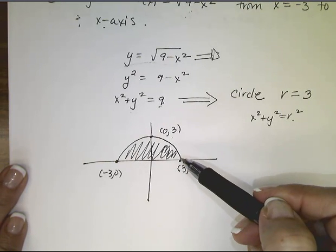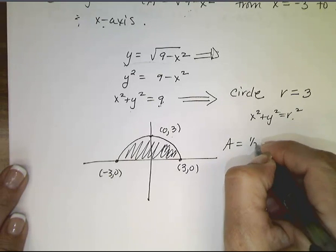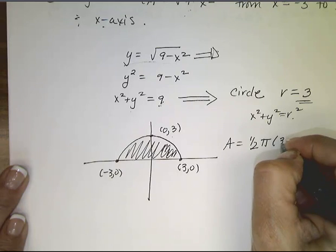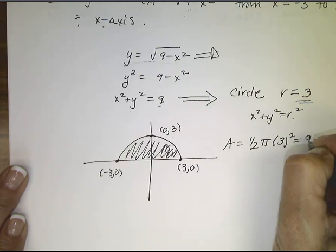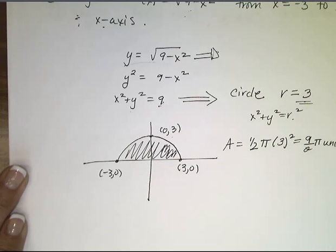So the area of that semicircle is half the area of the full circle. So the area is 1 half pi r squared, but my r is 3. So 3 squared, which is 9 halves pi square units. Still easy and still involves no calculus.